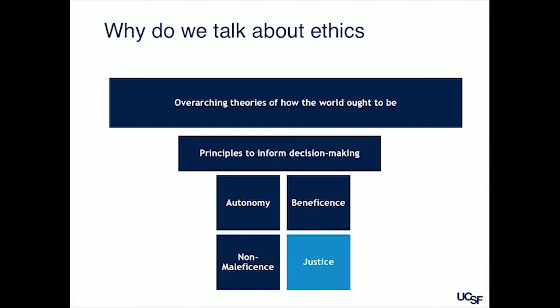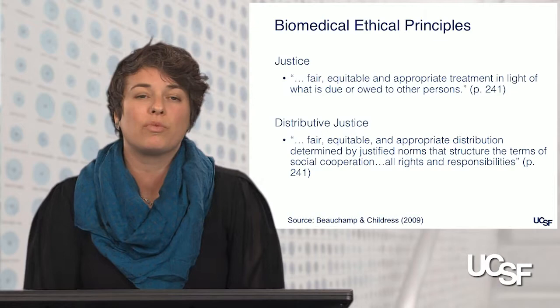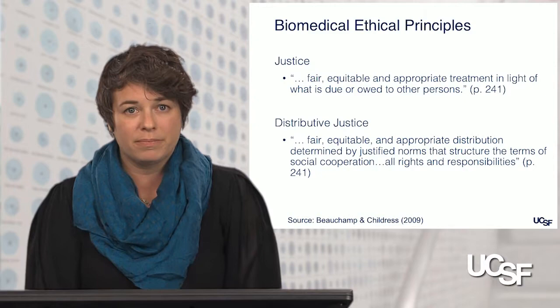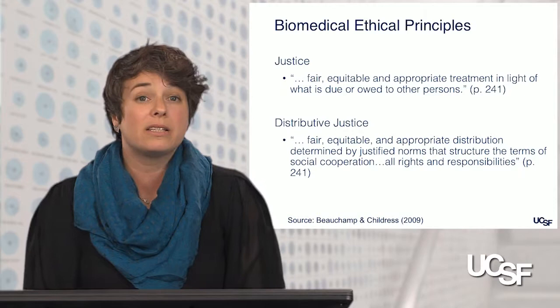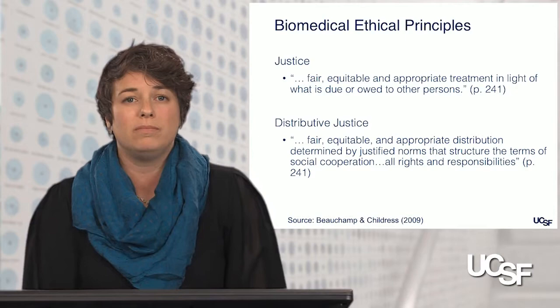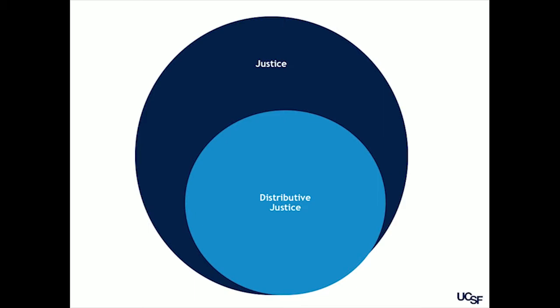So what do we mean when we're talking about justice? I think it's always helpful to start with how experts define it. Beauchamp and Childress wrote the Principles of Biomedical Ethics — it's a commonly used resource, and I highly recommend it. They define the overarching theory of justice as fair, equitable, and appropriate treatment in light of what is due or owed to other people. Within the concept of justice is a concept of distributive justice, which is the fair, equitable, and appropriate distribution determined by justified norms that structure the terms of social cooperation, all rights and responsibilities. Distributive justice is one part of the overarching concept of justice.